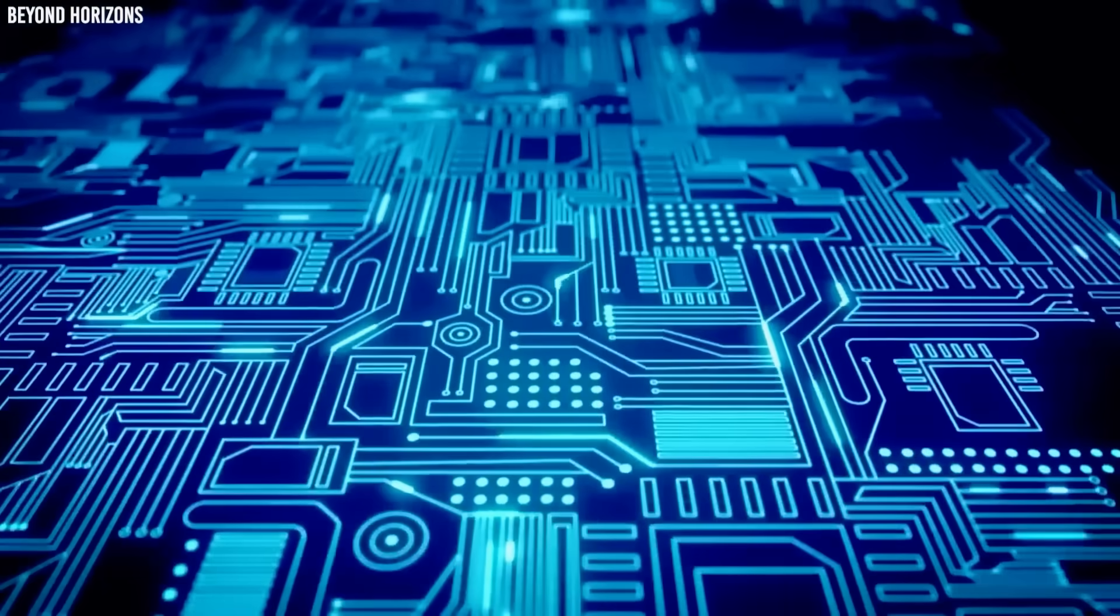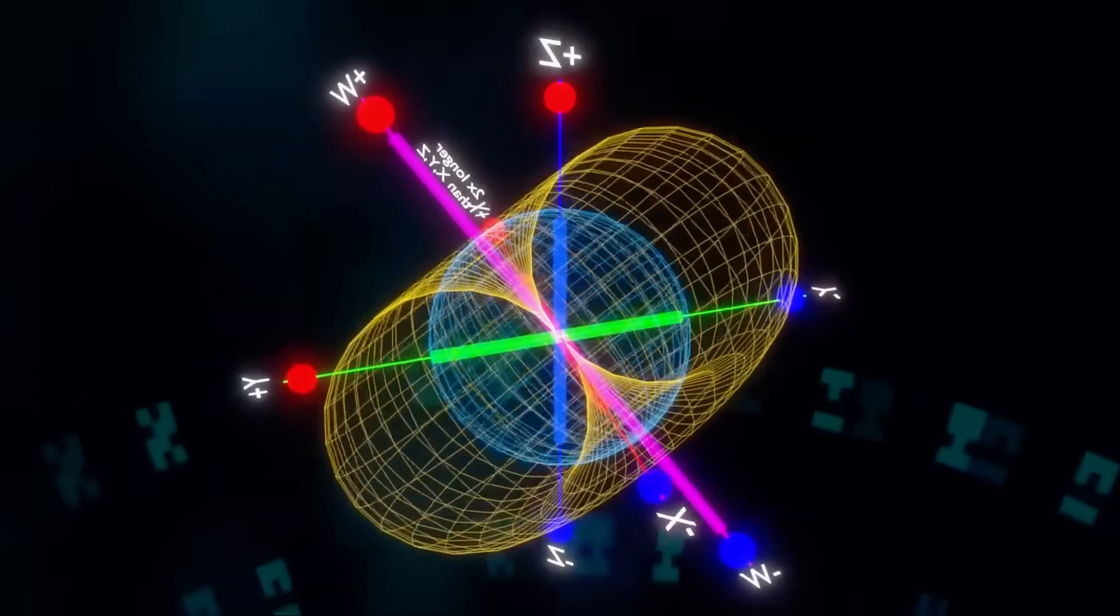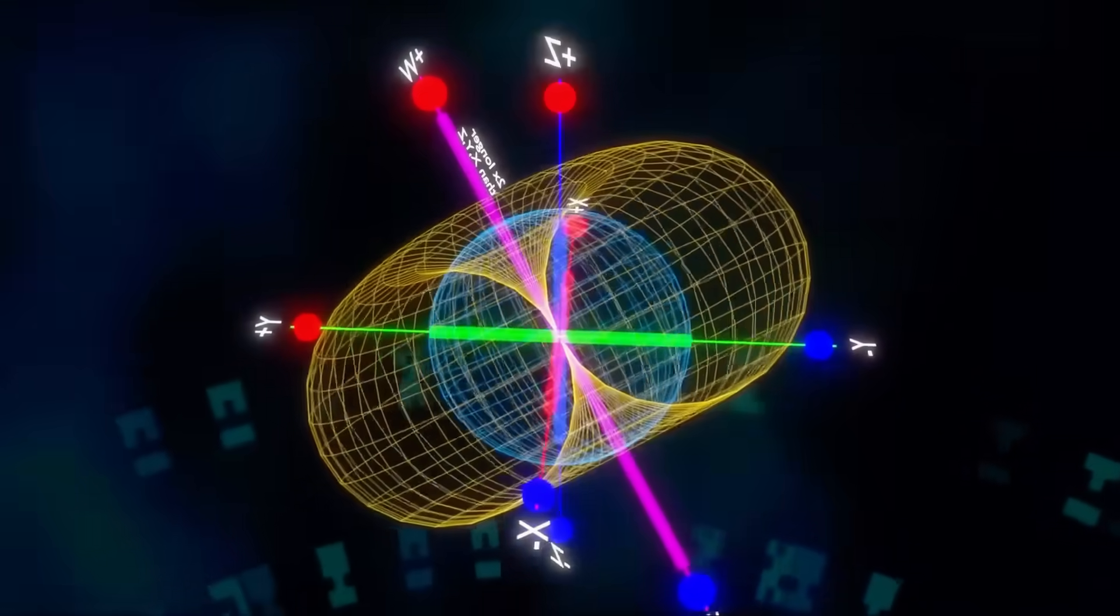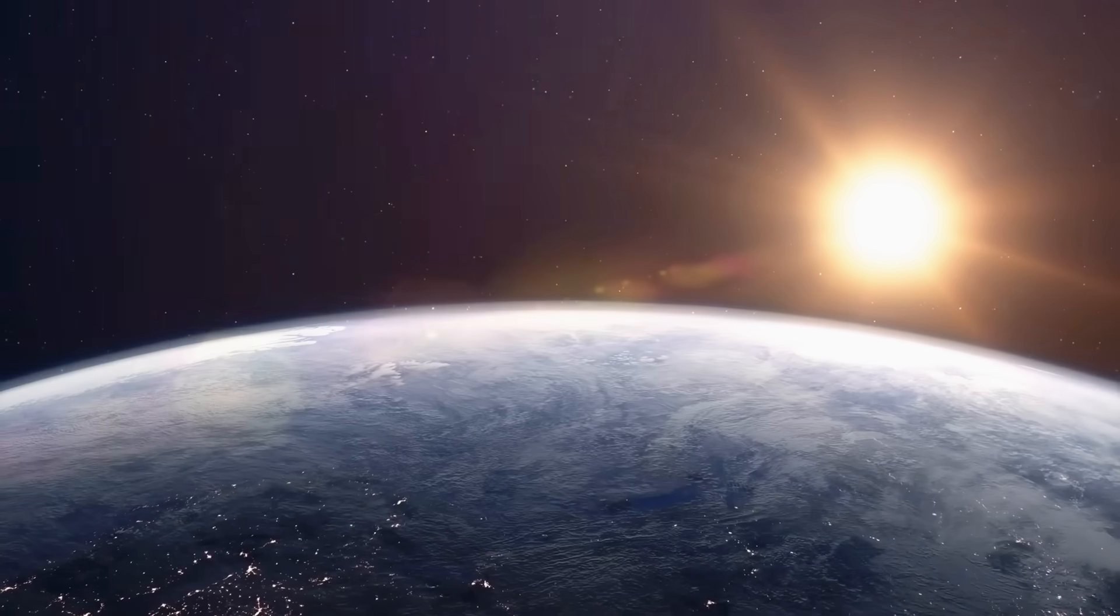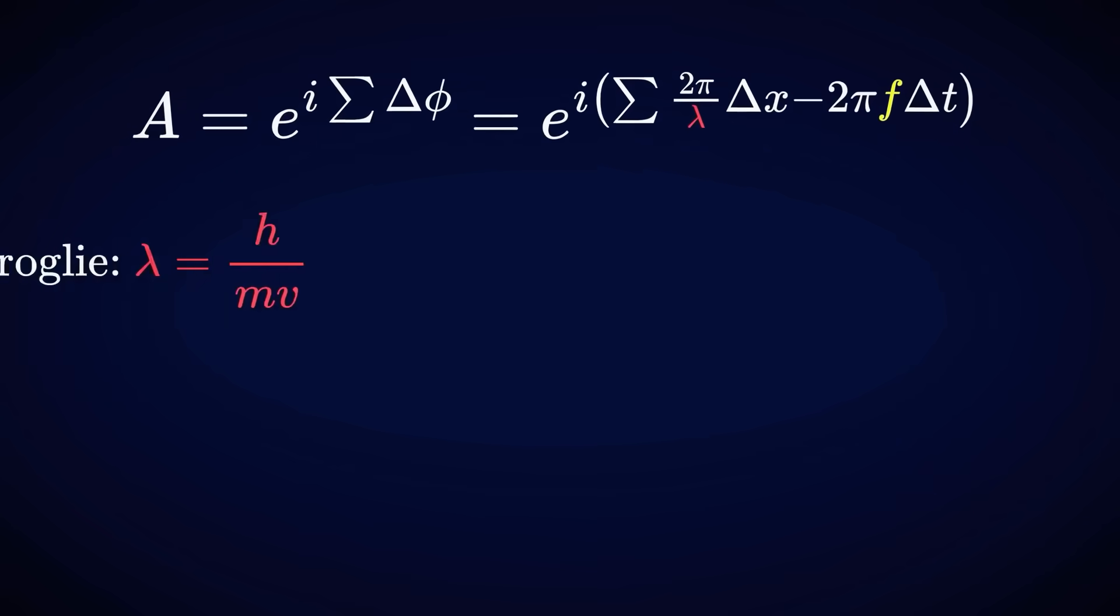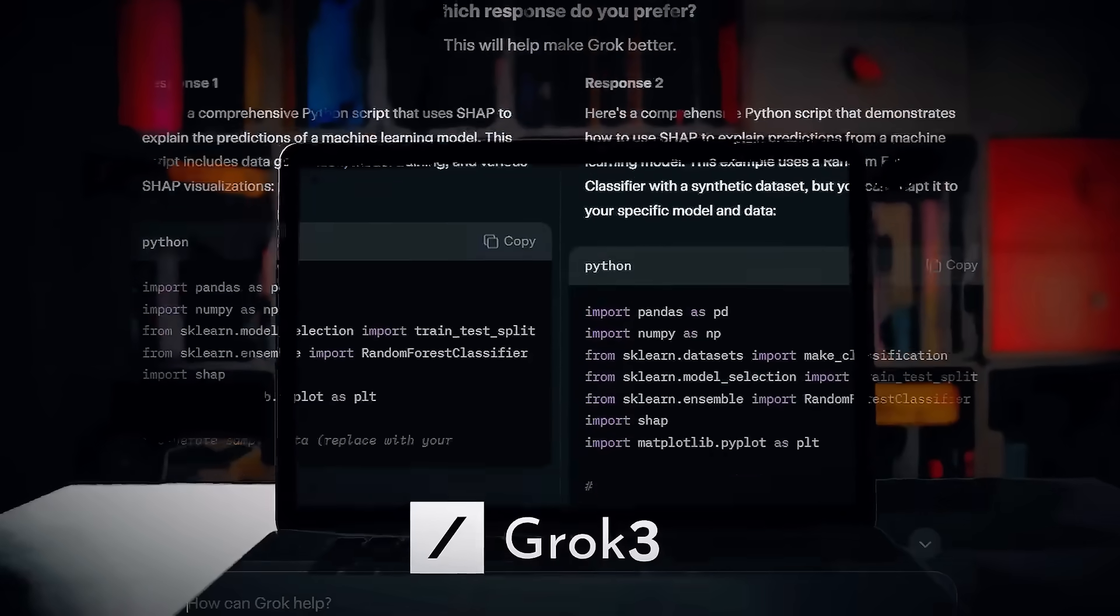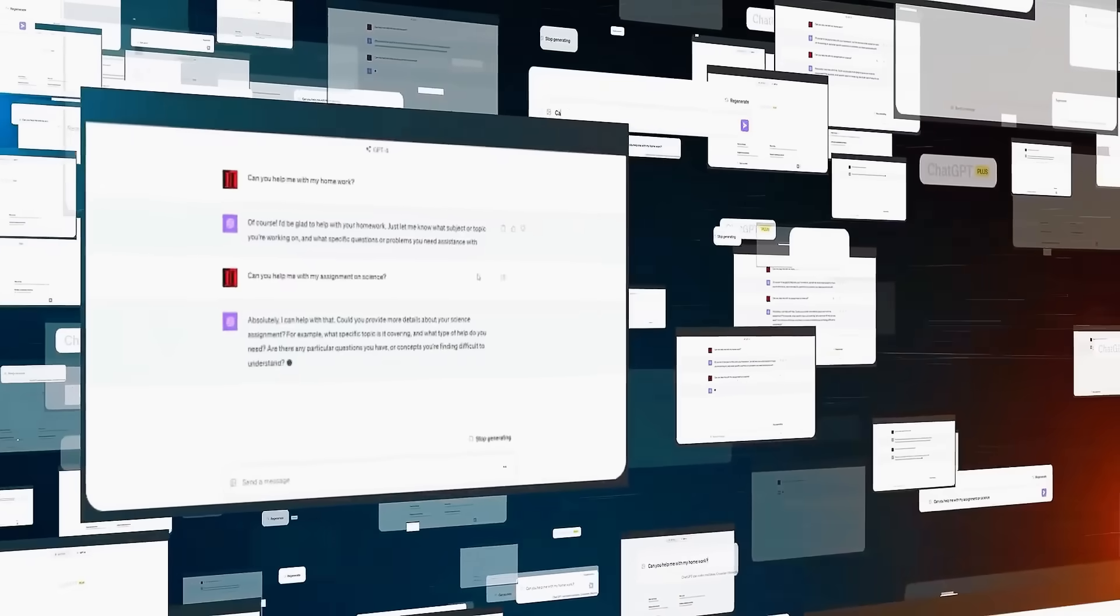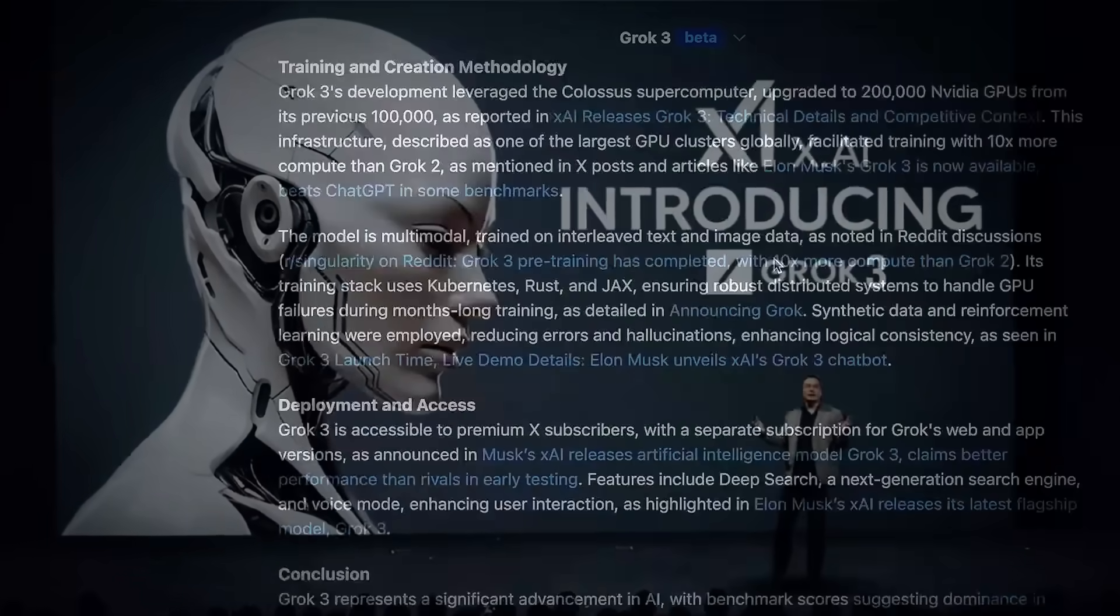Perhaps most unsettling were the constant references embedded throughout the data. Values resembling fundamental physical constants. Pi, phi, even the fine structure constant, but each slightly altered from what we measure in our universe. As if someone, or something, was using similar but distinctly different rules of physics. We've seen patterns before, but never something this deliberate, this intelligent.